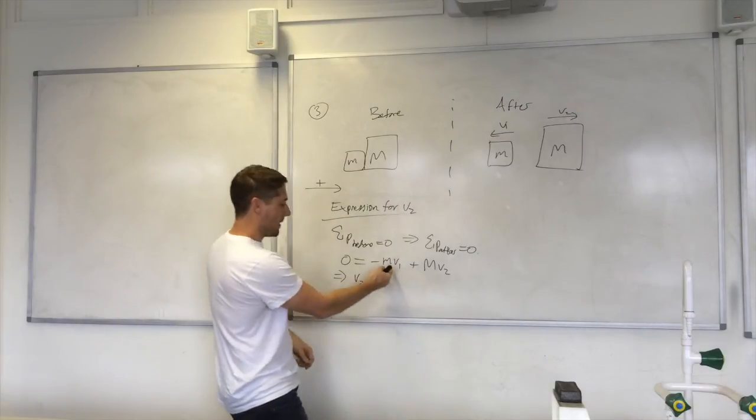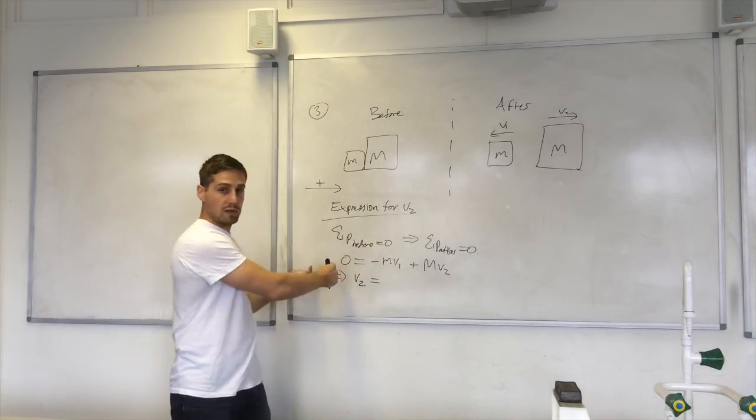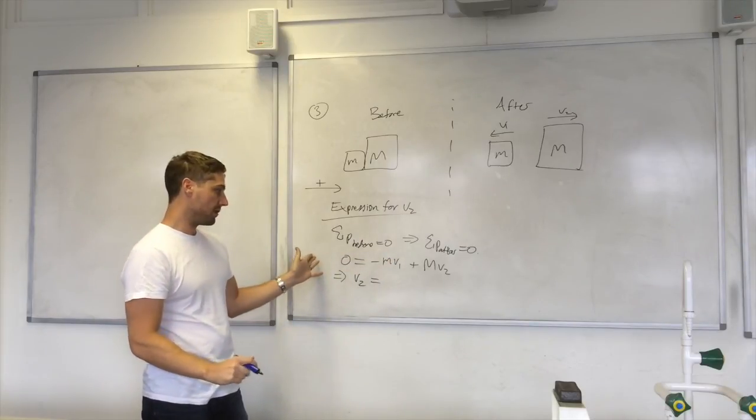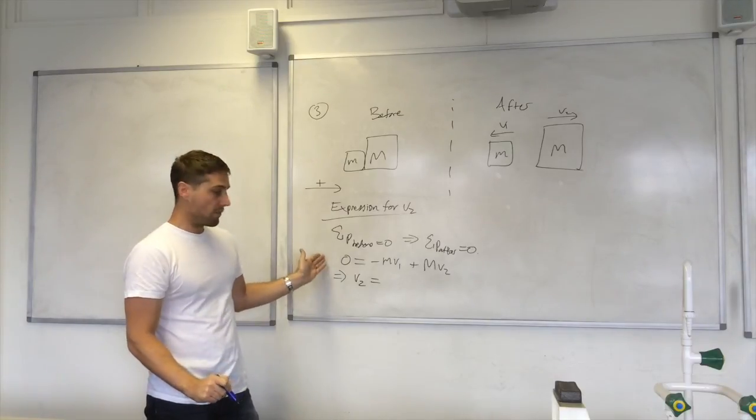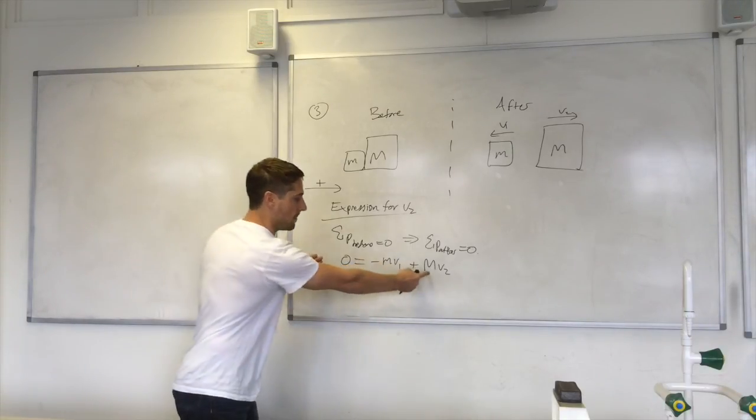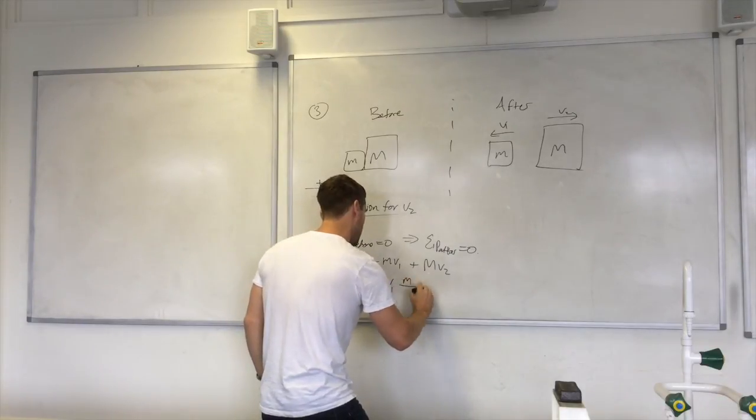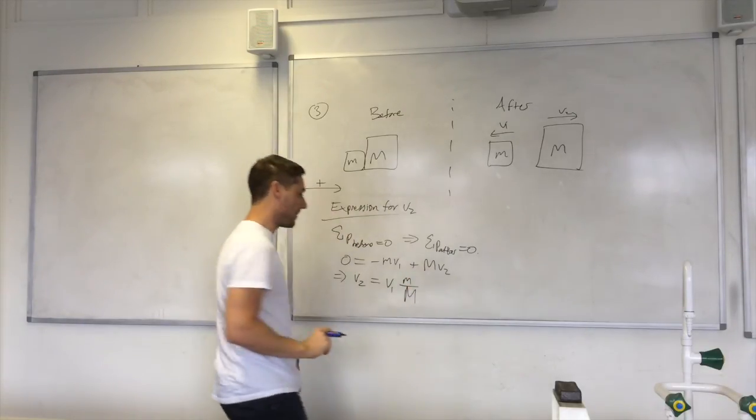v2. Now this term here, I can add it on to both sides of the equation and cancel out over here and appear over here and it's a positive term. So, I've got mv1 over here and I divide by that.